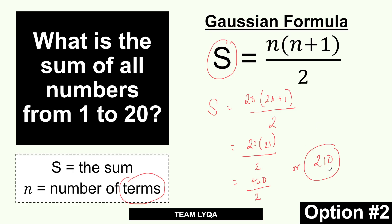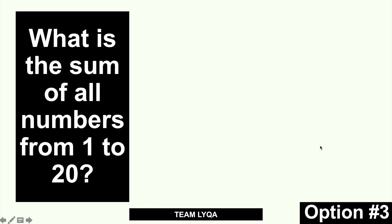That is how it usually works. So your options are: the traditional method where you write and add everything, the Gaussian formula, or the pairing technique I use. I'm not into formulas, so every time I see a problem like this I think of a way to make it easier — without adding one by one. The thing is, there's a pattern in the numbers.